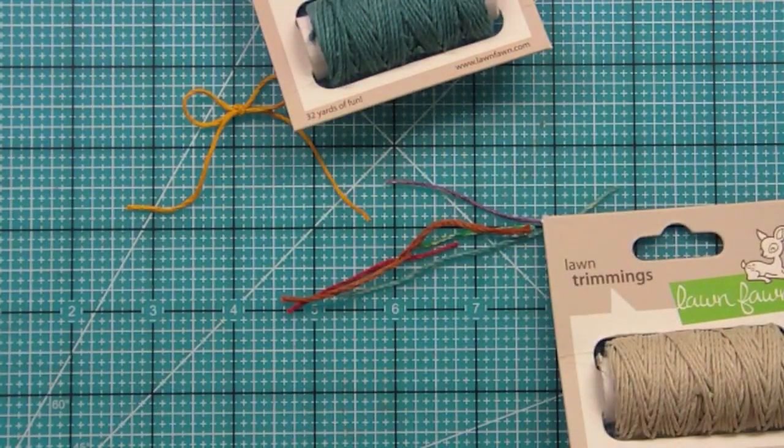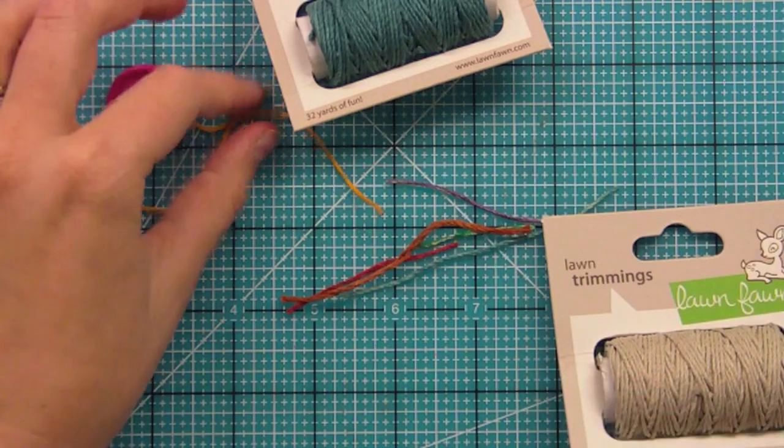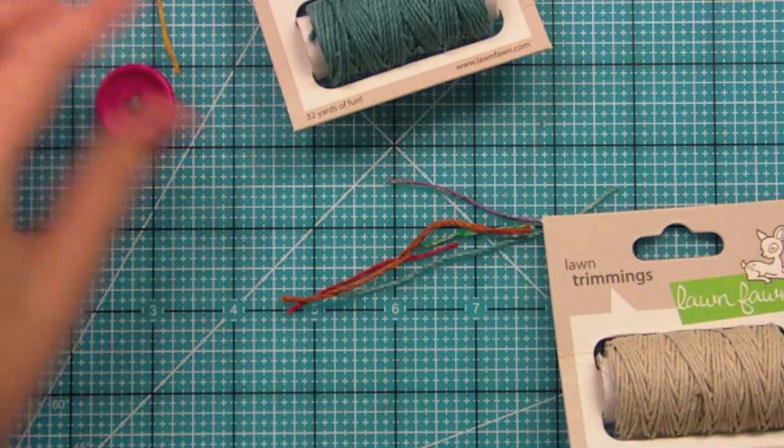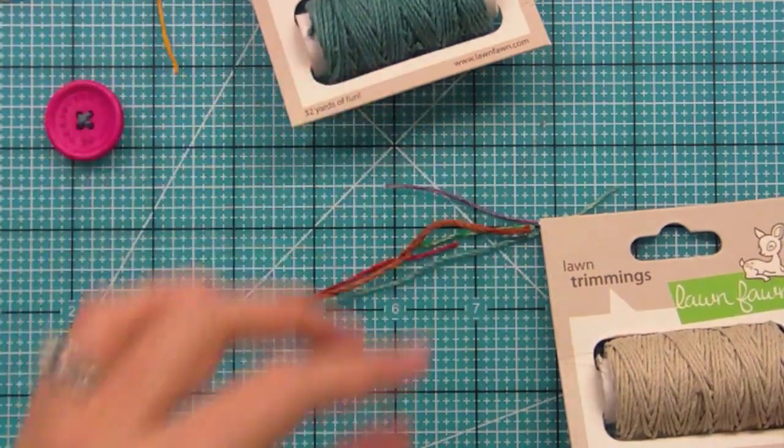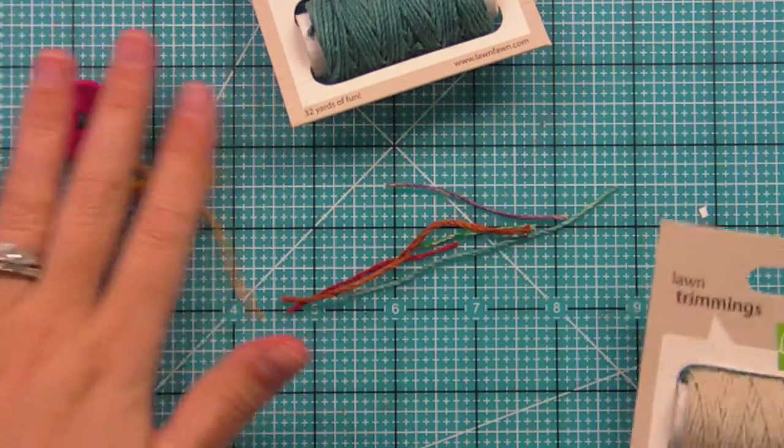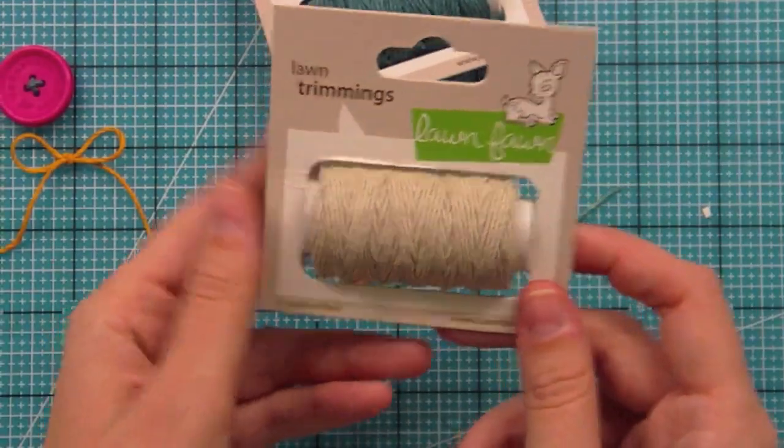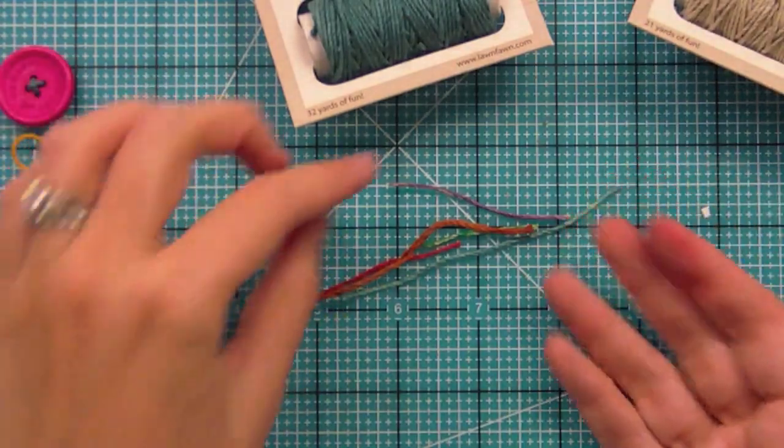It's great for putting around your cards, using it on tags, on scrapbook pages. There's a lot of examples on our blog that you guys can check out at lawnfawn.blogspot.com. Really fun ways to use this cord. And then we've got the natural one, which will match any project and then you can dye it too.